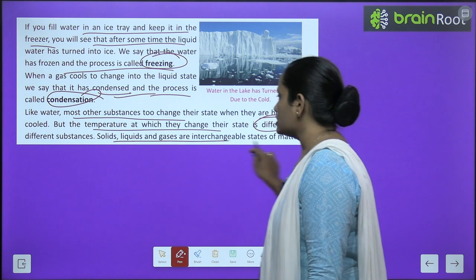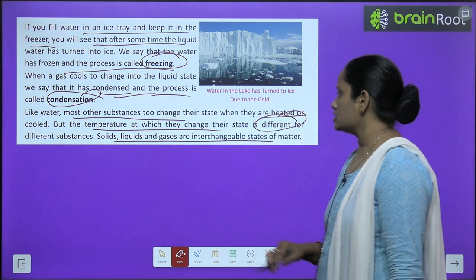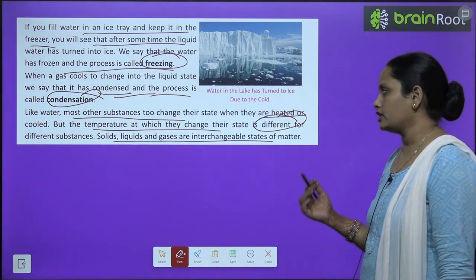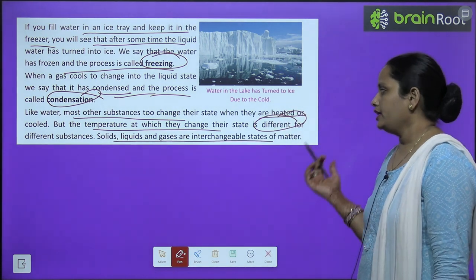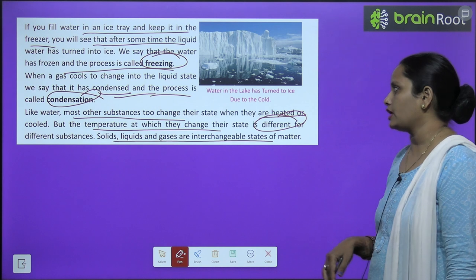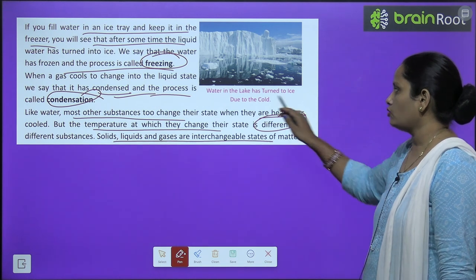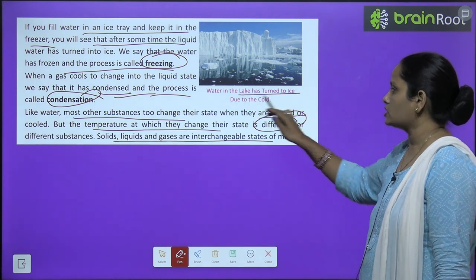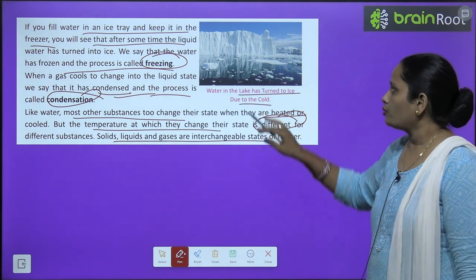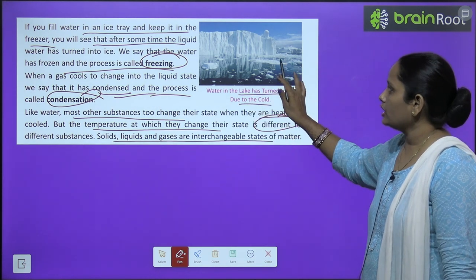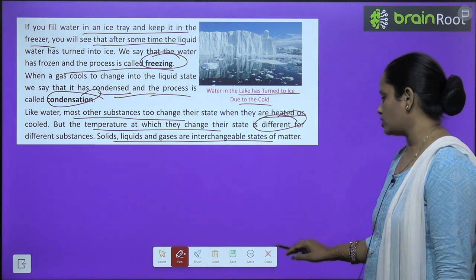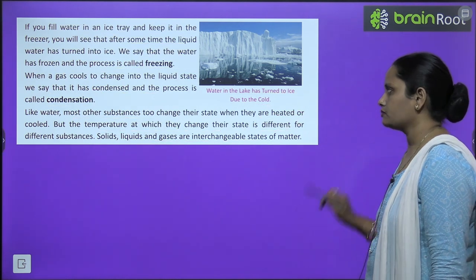Solid, liquid, and gas are interchangeable states of matter — yeh jo hain tino interchangeable states hain matter ke. Aap dekh sakte ho — water in the lake has turned into ice due to cold. Toh paani jo tha lake mein, thand ki wajah se wo sara jam chuka hai.